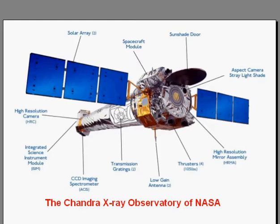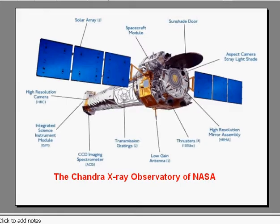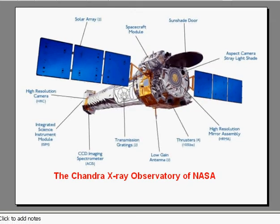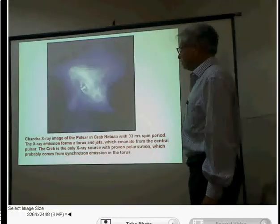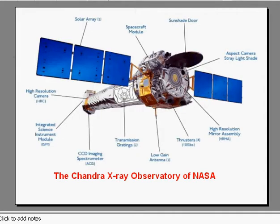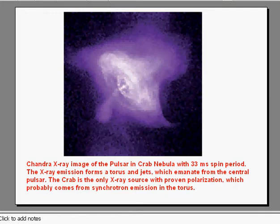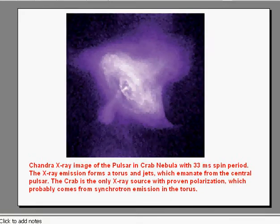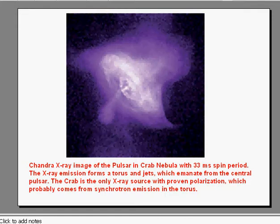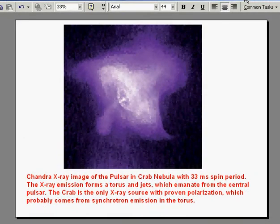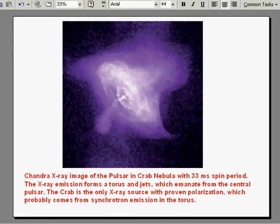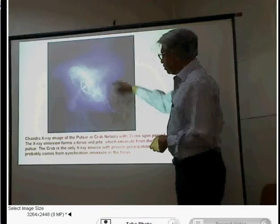These are the farthest objects in the universe — quasars, clusters of galaxies, and others. The next slide shows an image obtained with the Chandra X-ray Observatory. This is an image of a star which exploded in the year 1054 AD, known as the Crab Nebula. The Crab Nebula is the remnant or debris of a star which underwent a massive explosion in 1054 AD, as recorded by Chinese, Korean, and other oriental astronomers.